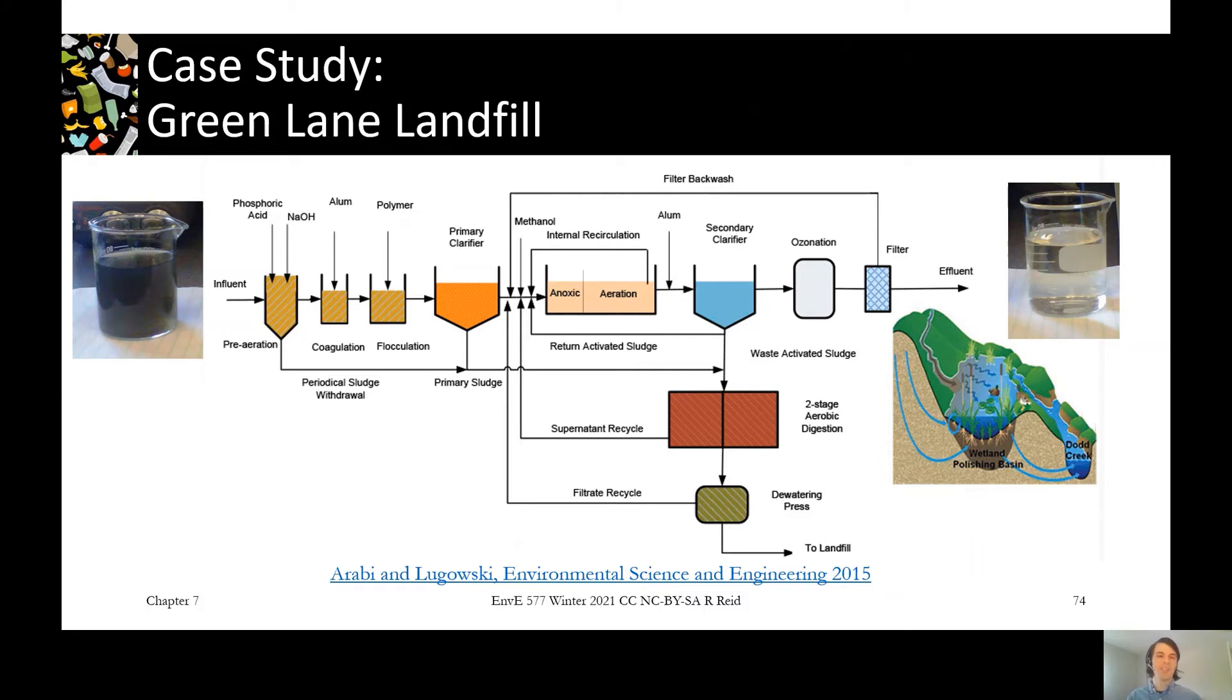So we want to make sure that while it's sitting in our leachate treatment facility, it's not continuing to produce methane and things like that. So there's a pre-aeration to start aerating it. You can see they're dosing phosphoric acid and that's to adjust that nitrogen to phosphorus ratio to make sure our microbes are going to be happy later on.